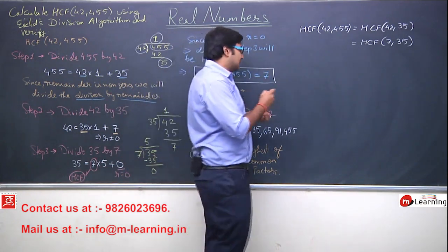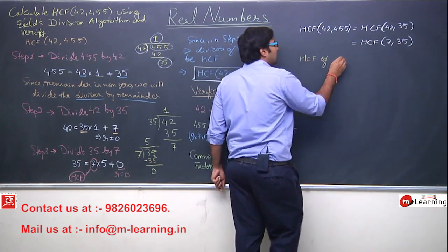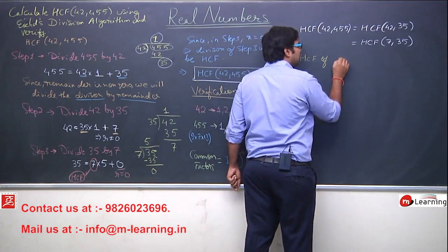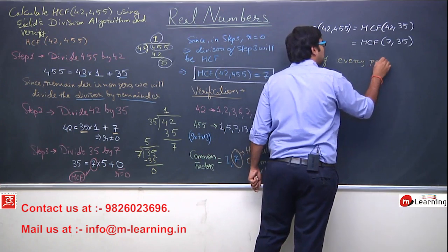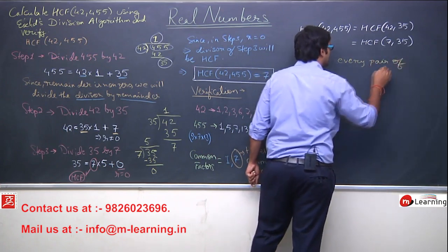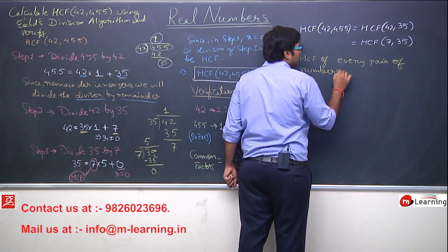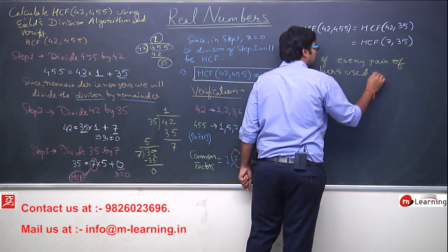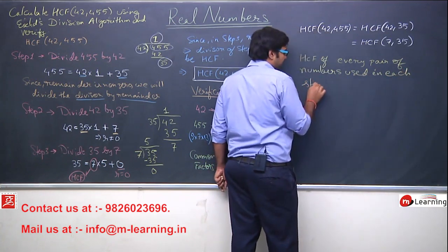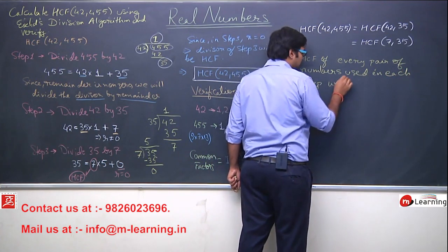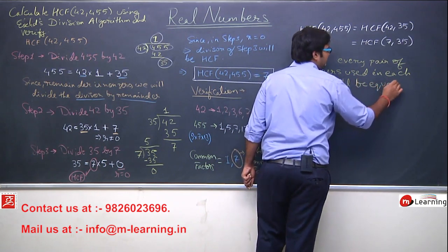So, HCF of every pair of numbers used in each step will be equal, will be same.